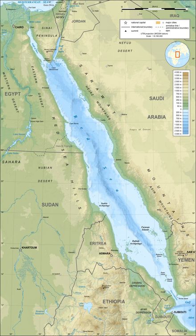The Red Sea is a seawater inlet of the Indian Ocean, lying between Africa and Asia. The connection to the ocean is in the south through the Bab el-Mandeb Strait and the Gulf of Aden. To the north lie the Sinai Peninsula, the Gulf of Aqaba, and the Gulf of Suez leading to the Suez Canal.